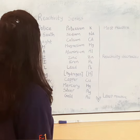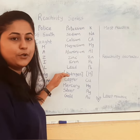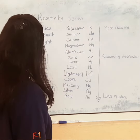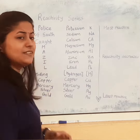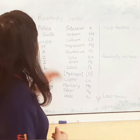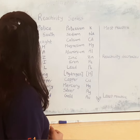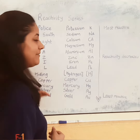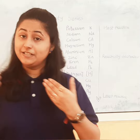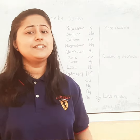So 'Police of South caught Mazile hiding' — hiding is hydrogen — copper, mercury, silver and gold. All these substances Mr. Mazile was hiding. So: police of south caught Mazile hiding copper, mercury, silver and gold. I hope that with this method you will be able to remember this reactivity series more easily.